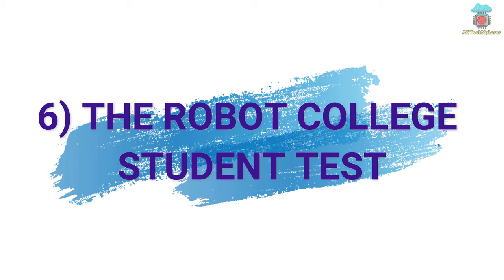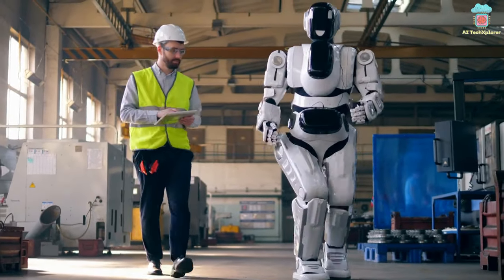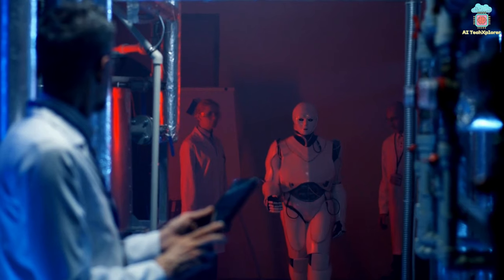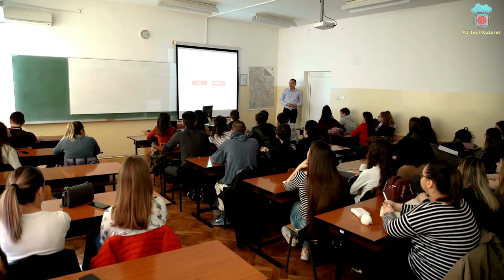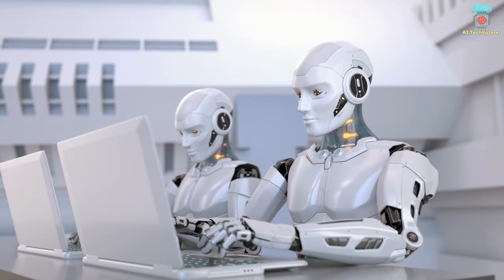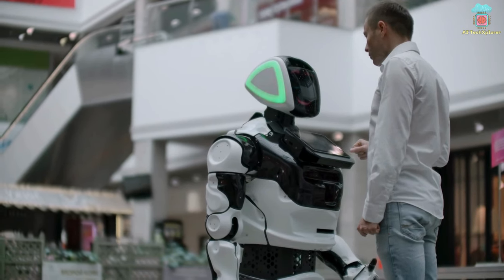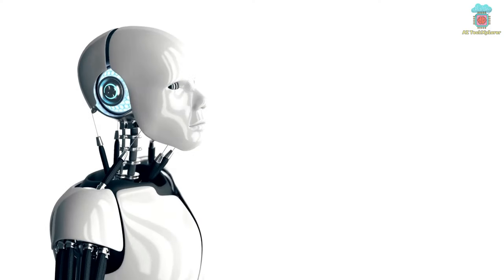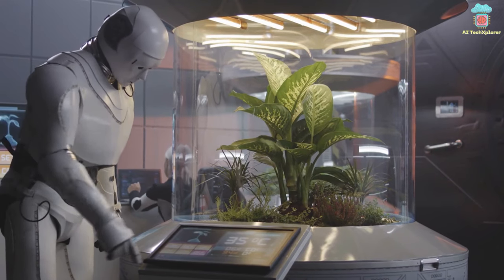Number 6: The Robot College Student Test. The Robot College Student Test is a proposed test for artificial general intelligence, proposed by Ben Goertzel in 2012. The test is simple: if a robot can enroll in a human university, take classes in the same way as humans, and get its degree, then it has passed the test. Goertzel argues it is a better test for AGI than the Turing Test because it is more demanding and requires a wider range of cognitive abilities.